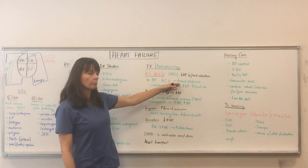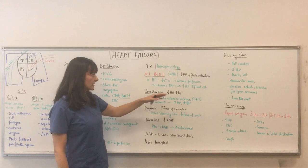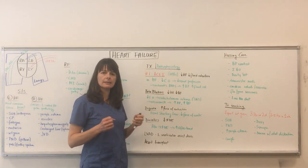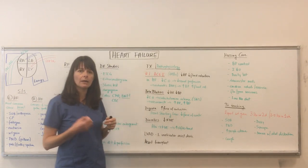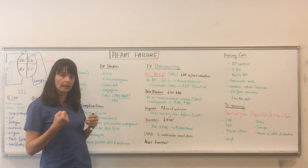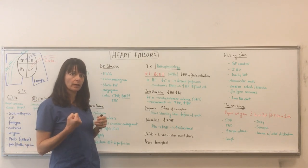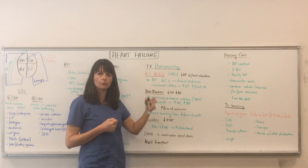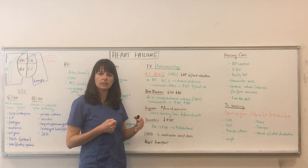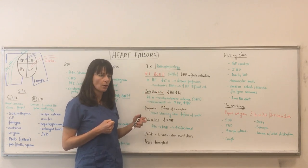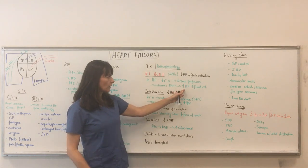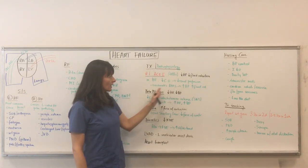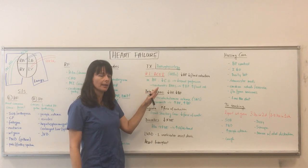Decreased cardiac output leads to decreased renal perfusion. The kidney says, I need more blood volume — give me something I can work with so I can increase my perfusion — which then leads to the activation of renin, angiotensin I, and aldosterone. And that leads to increased blood pressure and fluid retention. So that's the normal mechanism that will happen.